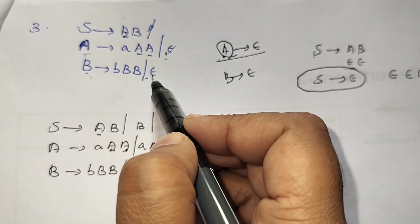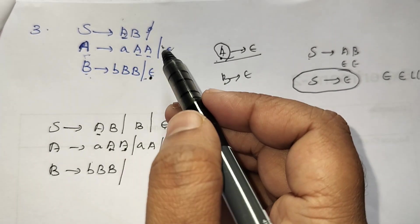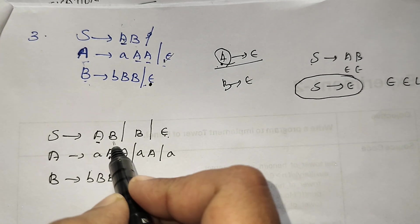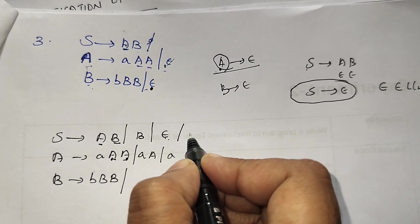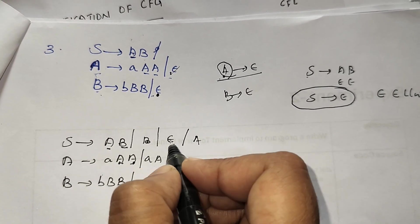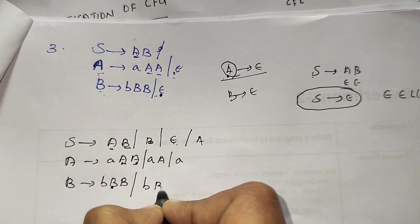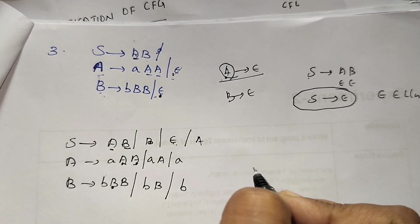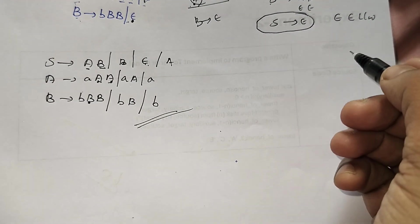After eliminating A → ε, now eliminate B → ε by finding all productions with B in the right-hand side. Substituting B with epsilon in the B → bBb production yields: replacing one B gives 'b', replacing the other gives 'bb', and replacing both gives 'b'. This gives the final context free grammar after eliminating all null productions.